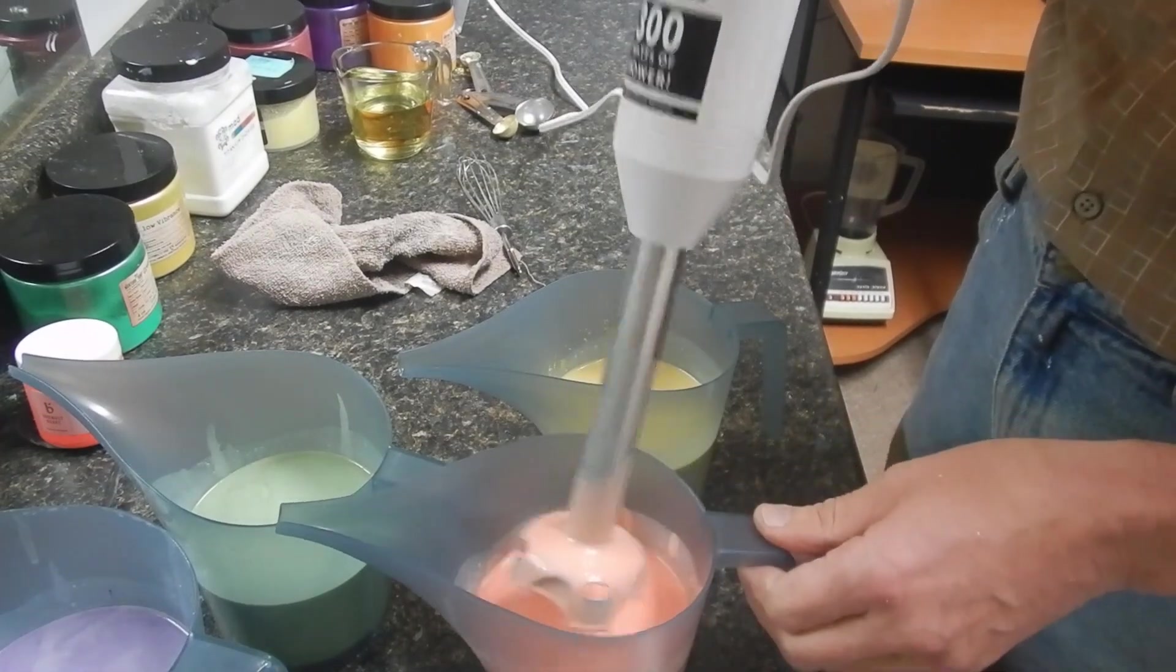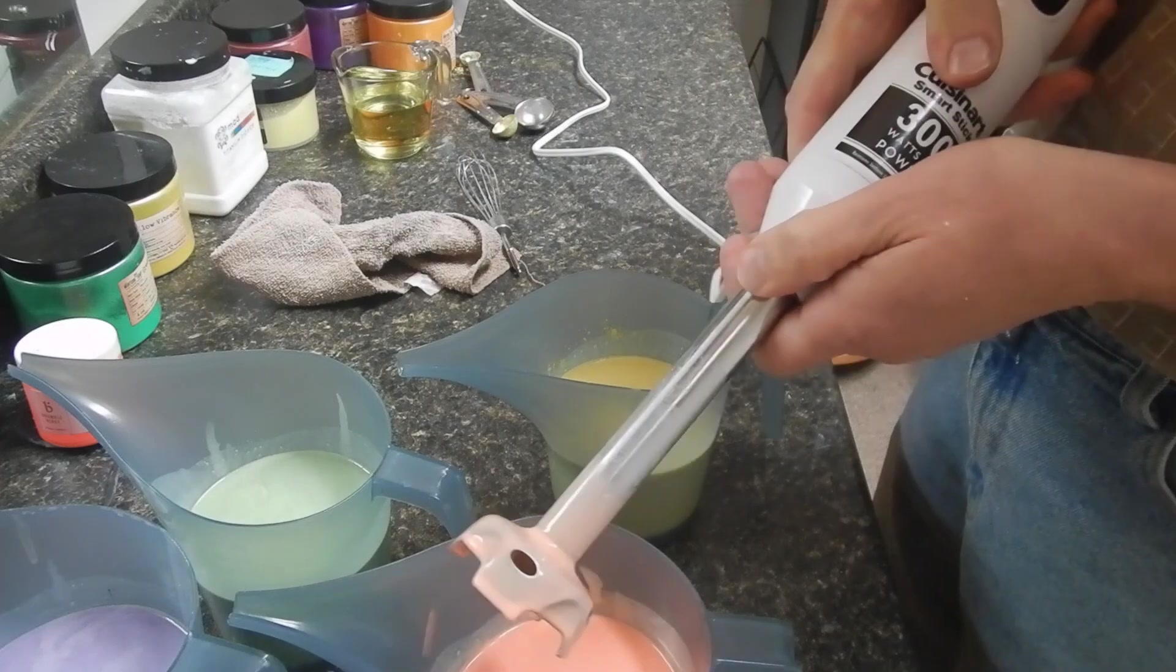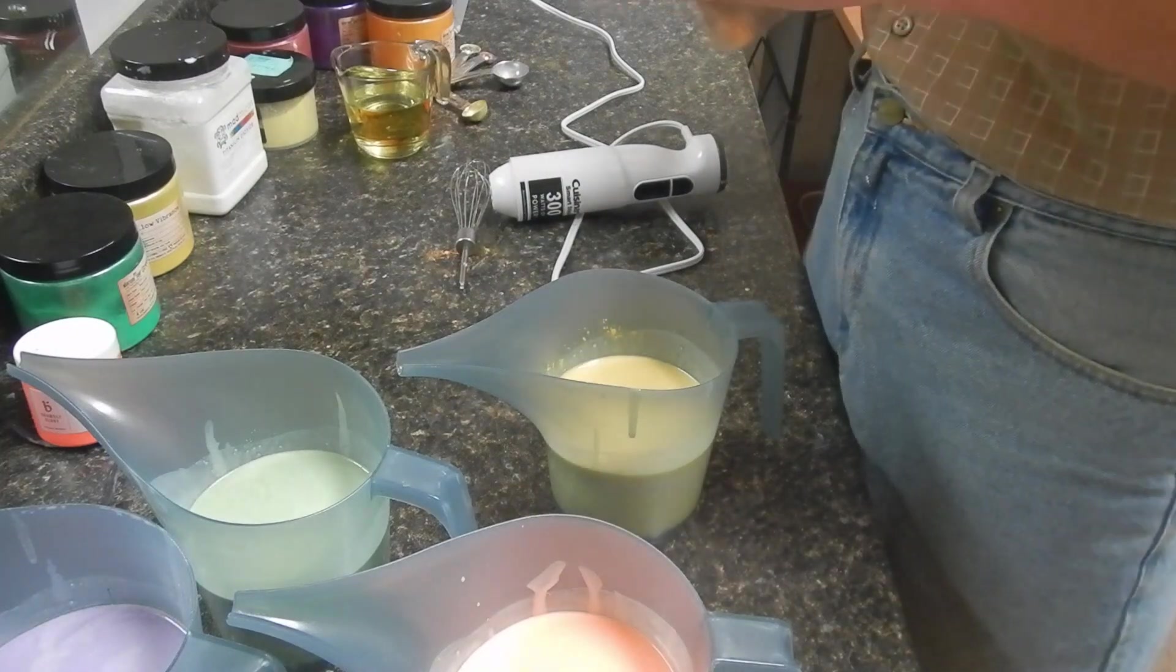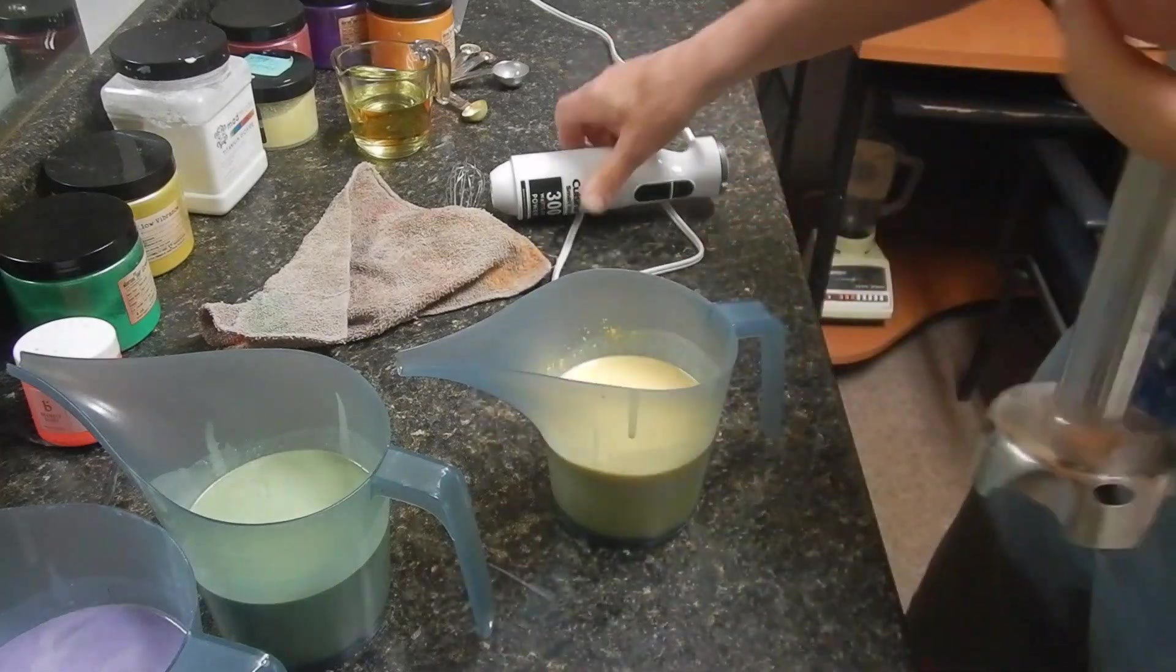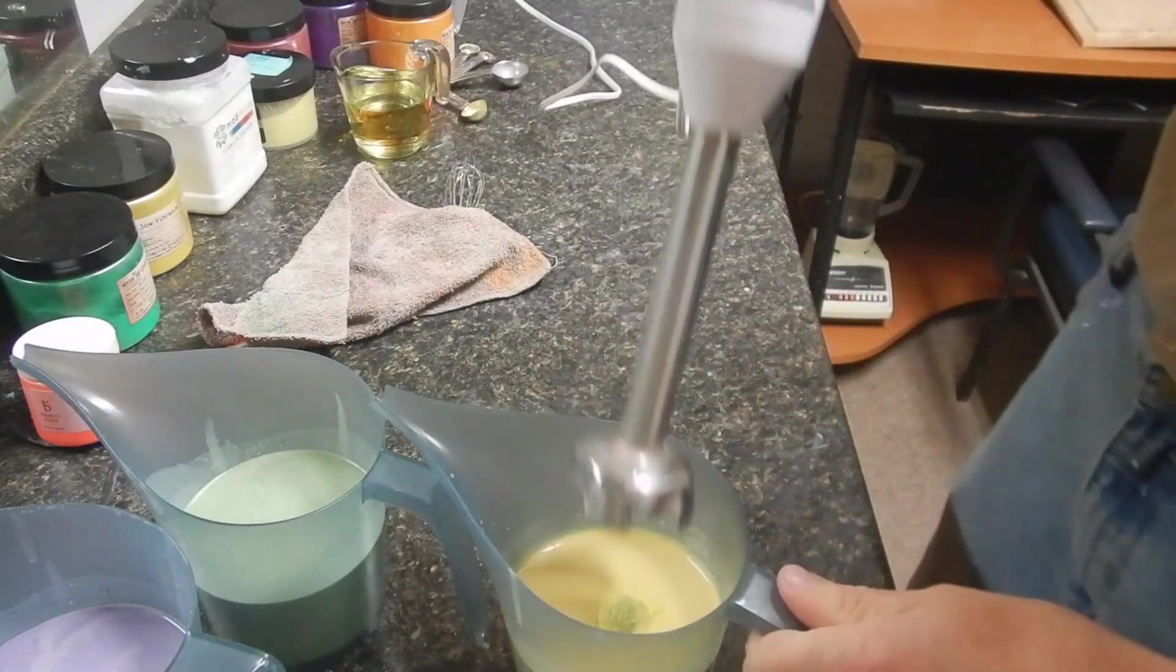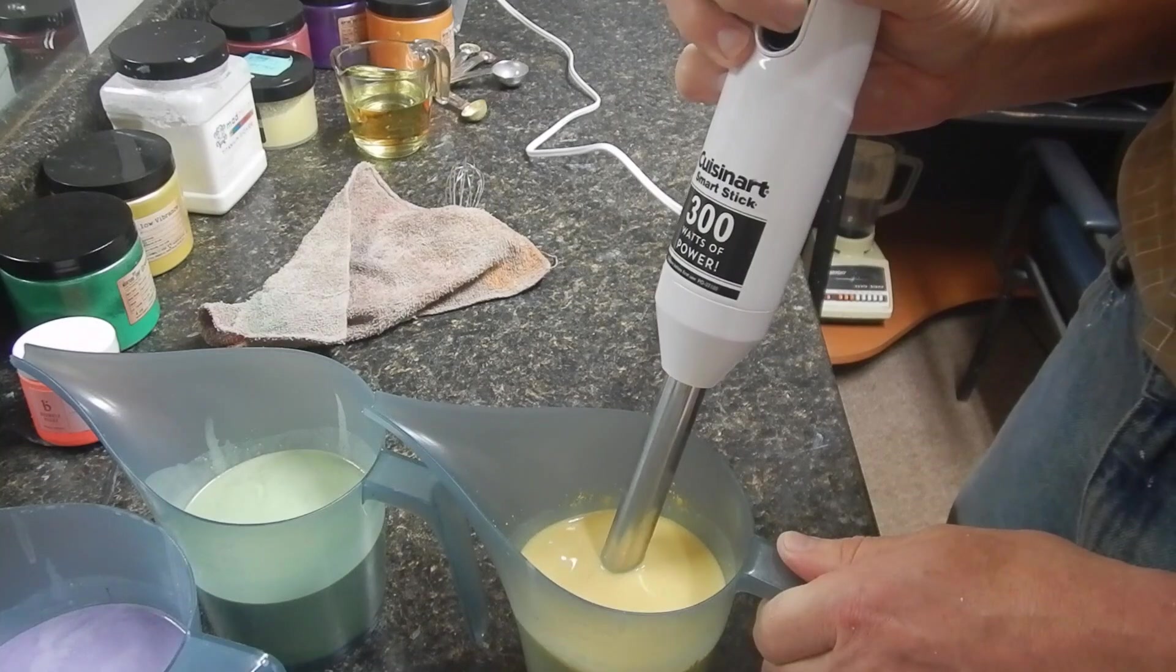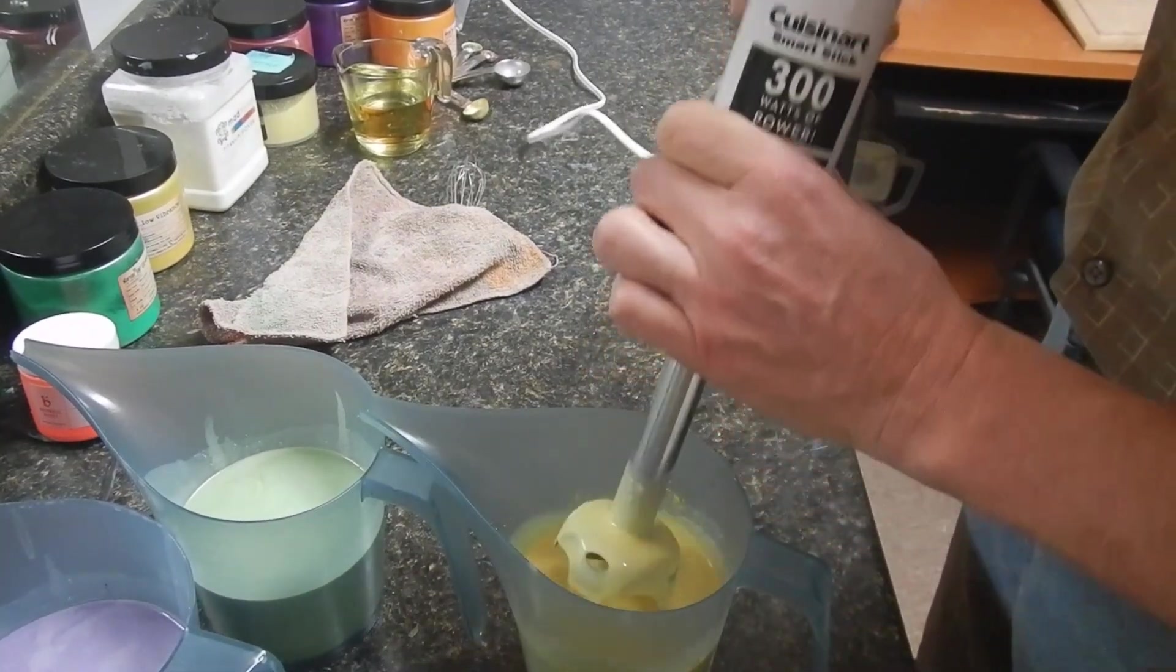And I should have done the yellow first. Let me clean this orange off the stick blender head. Because I don't want that mixed in my yellow. And finally, our yellow. Give it a quick pulse. Just trap that under the stick blender head. Burp it a little bit and give it a few pulses. And there, it's nice and stable.